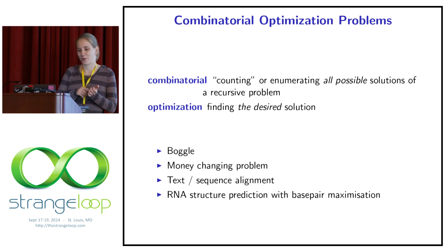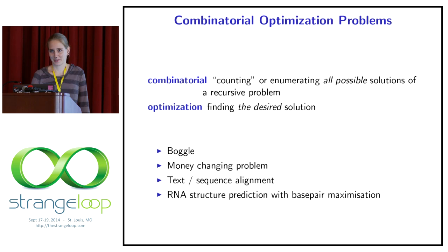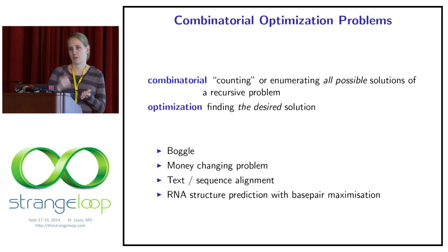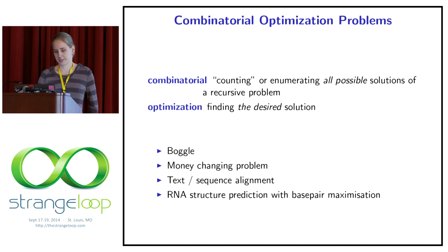Another really nice example is the money-changing problem — I think it's the smallest problem that I could find that can be solved by dynamic programming, that's why we're going to use it as an example. Imagine you have an amount of money, let's say $5, and you have some coins — let's say $1, $3, and $4. How can you decompose this value of money?